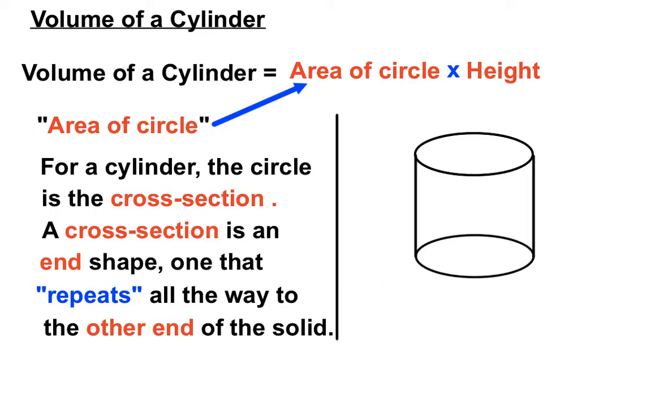So the area of a circle here, the area of the circle is a cross-sectional area, because that circle could really be thought of as slipping down the shape until it gets to the other end. So that's why we're working with the area of a circle as part of our volume of a cylinder calculation.